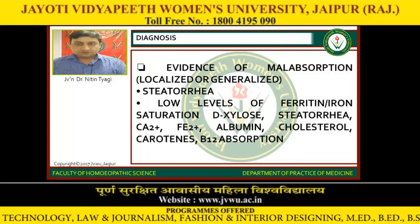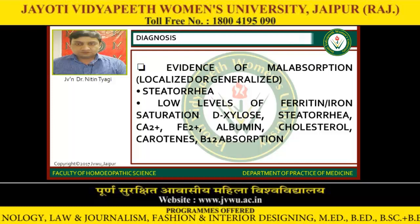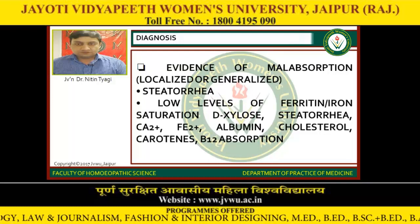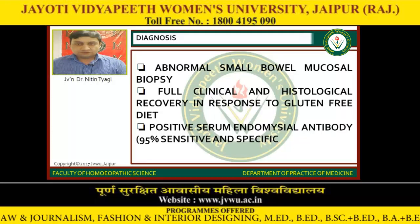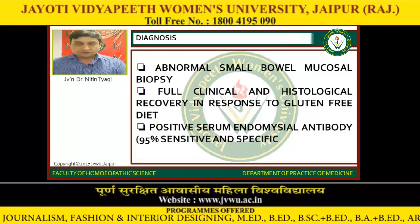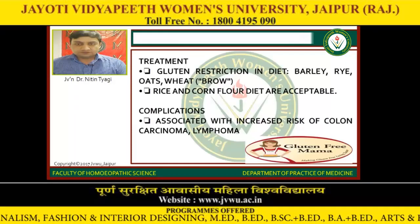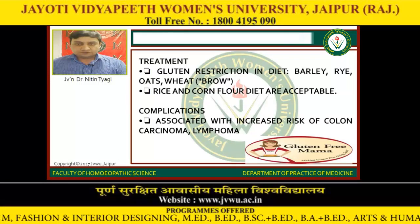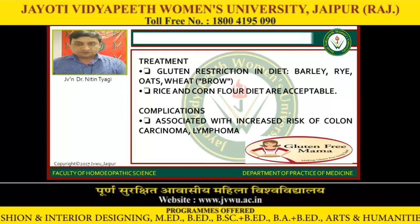Diagnosis: evidence of malabsorption — localized or general — with steatorrhea, low levels of ferritin, iron saturation, d-xylose, calcium ions, iron, albumin, cholesterol, ketones, and B12 absorption. Abnormal small bowel mucosal biopsy. Full clinical and histological recovery in response to a gluten-free diet. Positive serum endomysial antibody — 90% sensitive and specific. Treatment: gluten restriction in diet — barley, rye, oats, and wheat are excluded; rice and corn flour diet is acceptable. Complication: associated with increased risk of colon carcinoma or lymphoma.